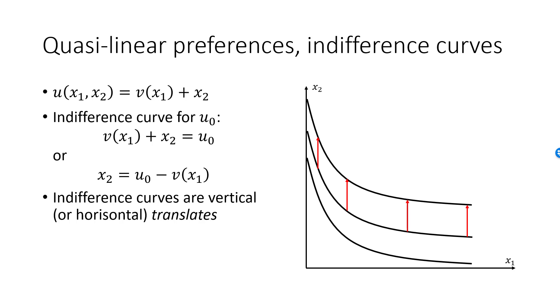From this we also see that MRS is independent of $x_2$. The slope of the indifference curve will not change if you move vertically upwards or downwards. If the utility function happens to be quasi-linear and linear in $x_1$, then indifference curves will be horizontal translates and MRS will be independent of $x_1$.